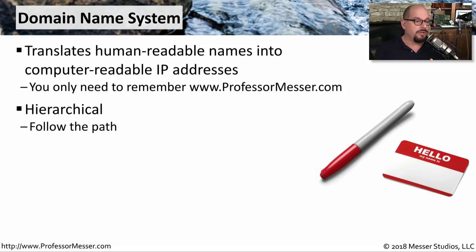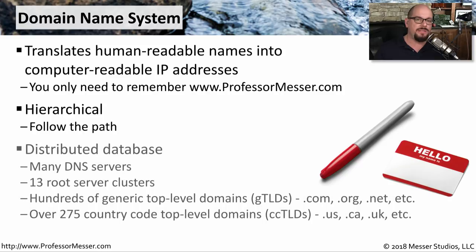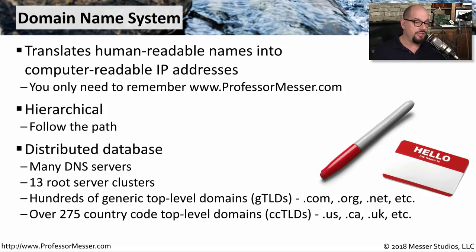DNS is a hierarchical system which follows a very specific path to be able to find exactly the server you're trying to locate. And it's a database that's very distributed — there are many DNS servers around the world. There are over 13 clusters of root servers at the core of DNS. You often find generic top level domains like .com, .org, or .net, and there are also country code top level domains for the US, Canada, UK, and other countries.